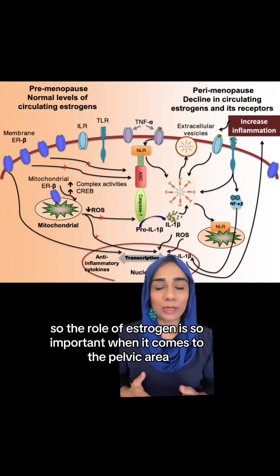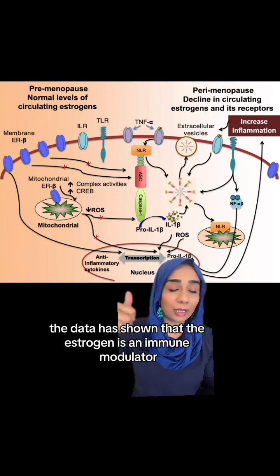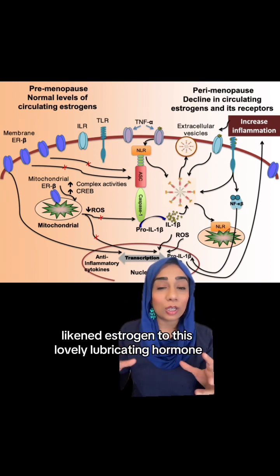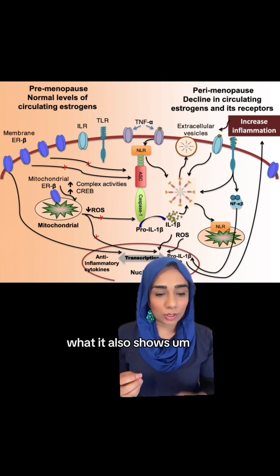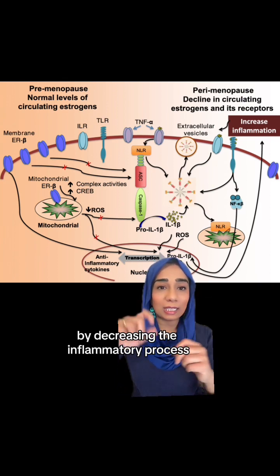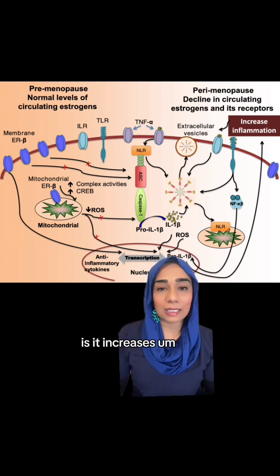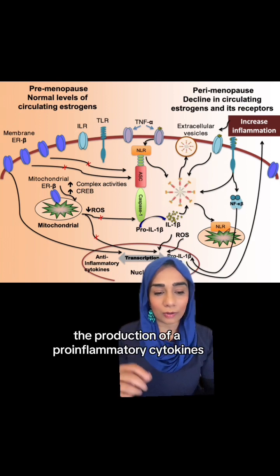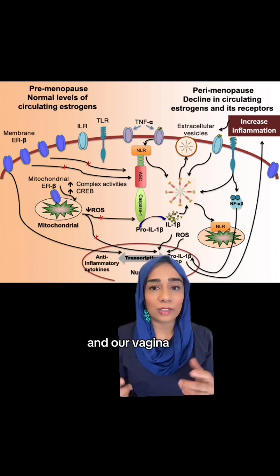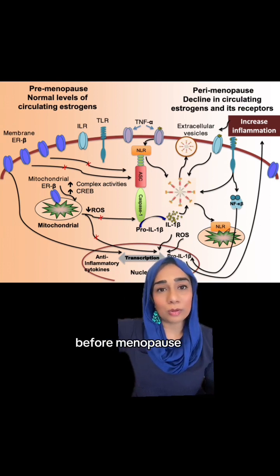The role of oestrogen is so important when it comes to the pelvic area and looking after our bladder. The data has shown that oestrogen is an immune modulator — something that our immune system uses. Over my years as a doctor, I've likened oestrogen to this lovely lubricating hormone. What the data also shows is that oestrogen contributes to the functional integrity of the bladder barrier by decreasing the inflammatory process, which is linked with urinary tract infections. And it also increases the production of pro-inflammatory cytokines to fight off urinary infections. So oestrogen is really important around our vulva and vagina.